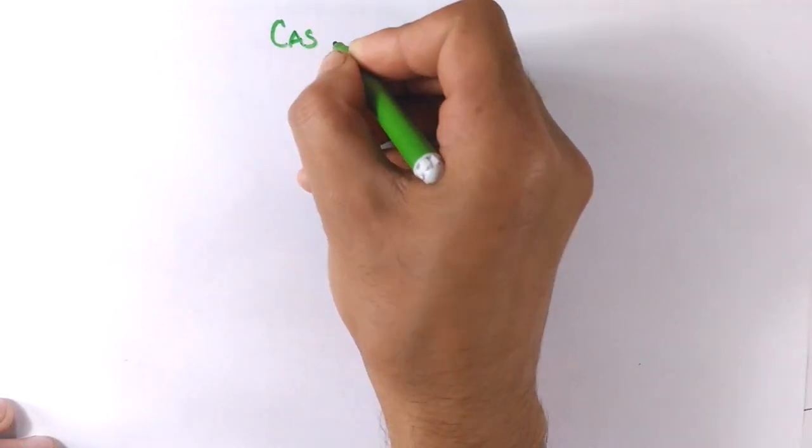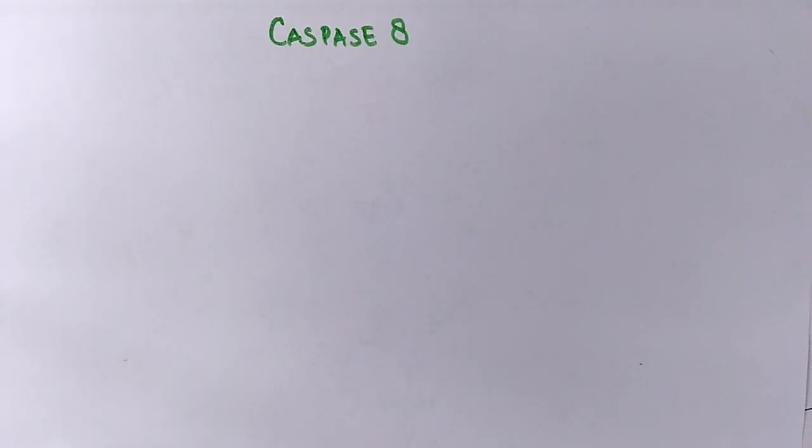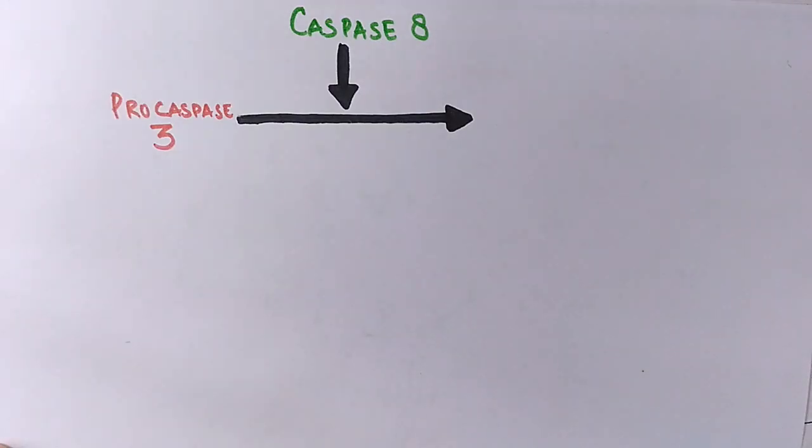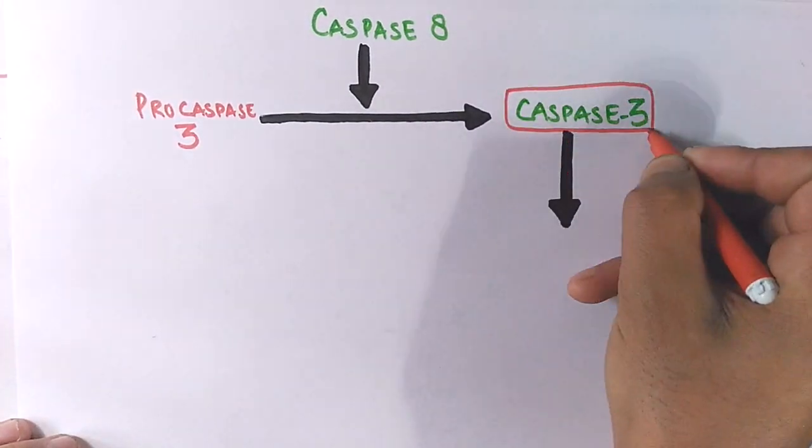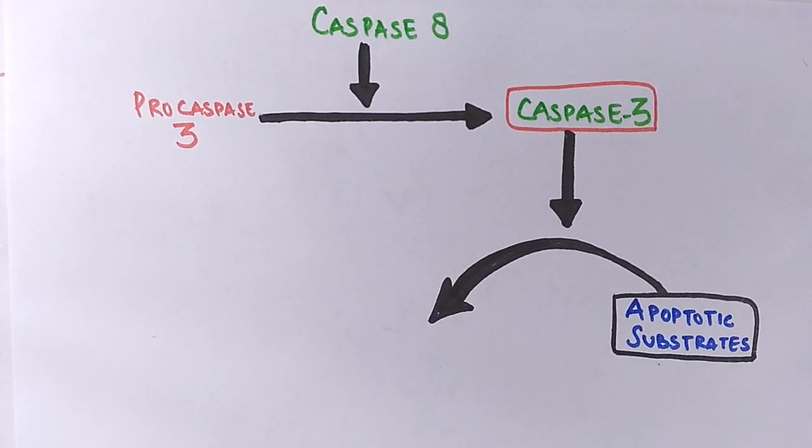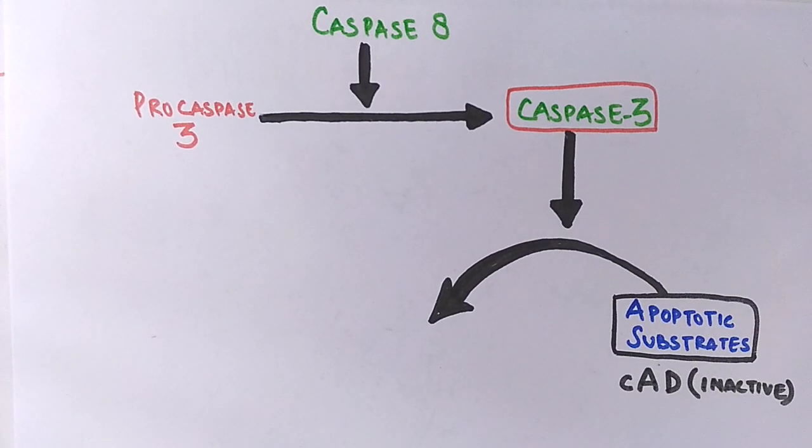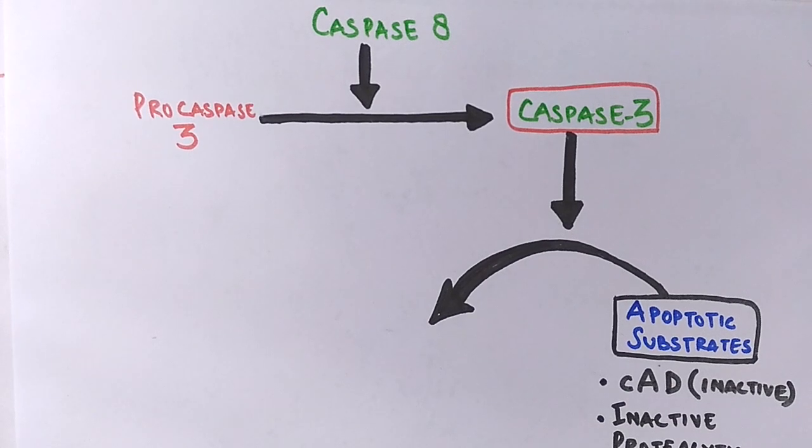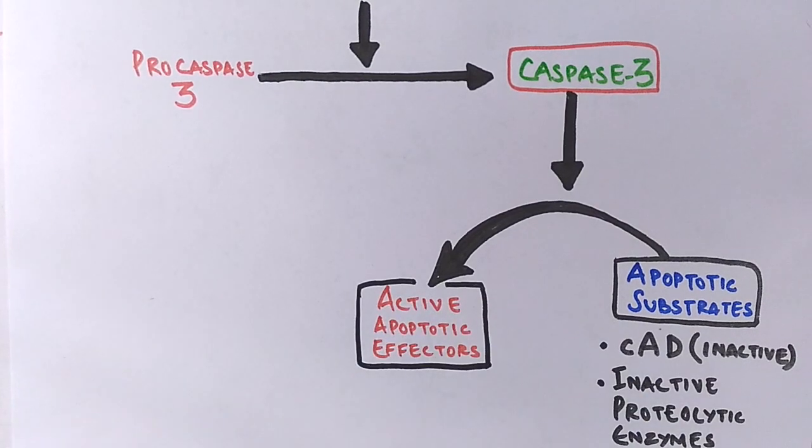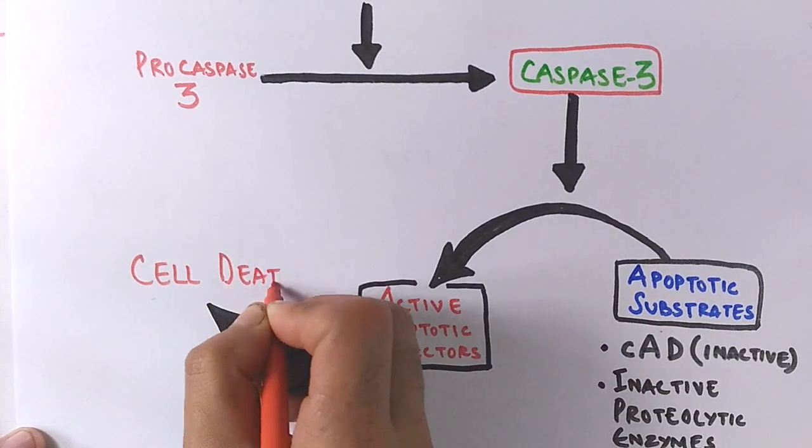So the cascade starts when the caspase 8 gets released from death inducing signaling complex, that's DISC, and this caspase 8 further cleaves the procaspase 3 into its active form apoptotic enzyme, that's caspase 3. Finally the caspase 3 acts on apoptotic substrates that are in inactive state, like caspase dependent DNAase, proteolytic enzymes and other enzymes, and converts them into its active apoptotic effectors like activated DNAase, activated proteolytic enzymes which degrade DNA and nuclear lamina respectively, and eventually there is cell death.